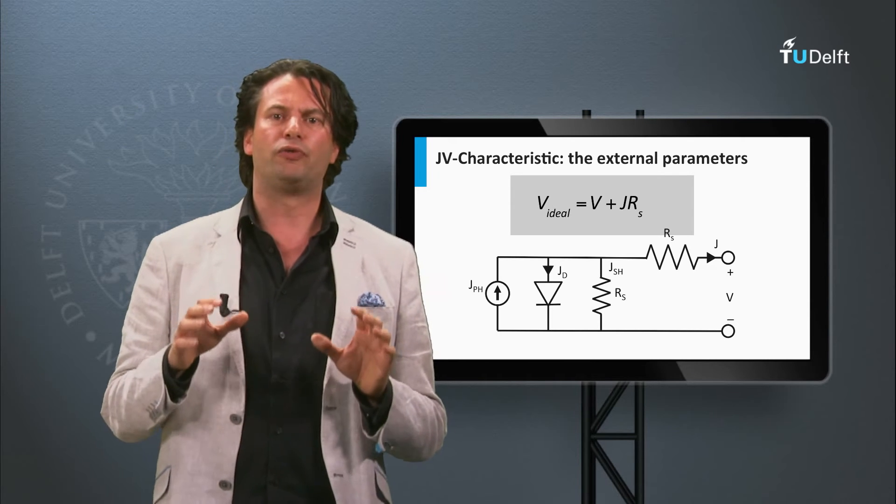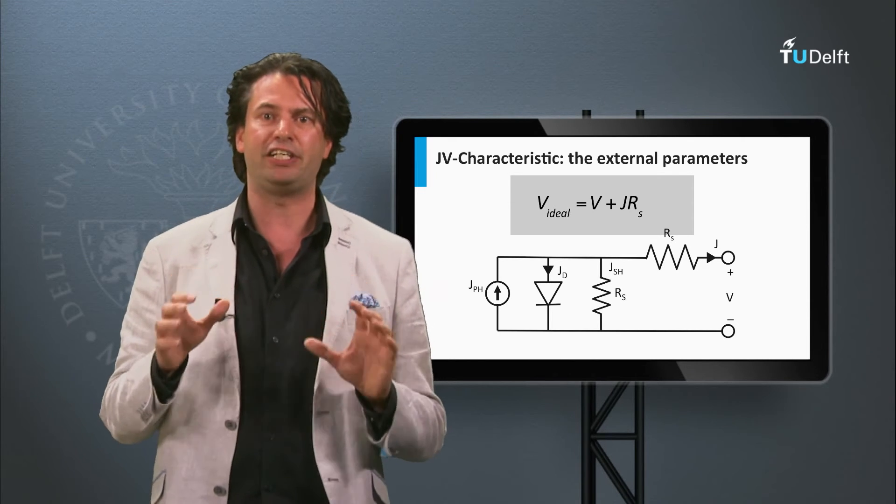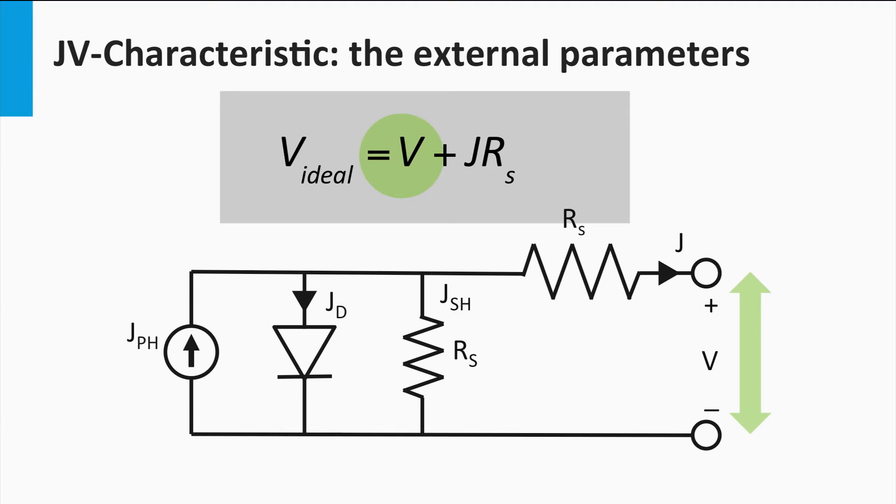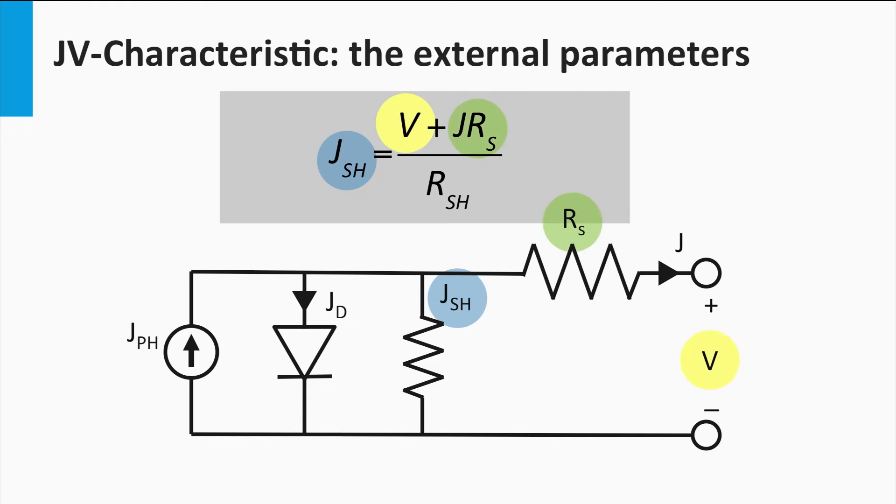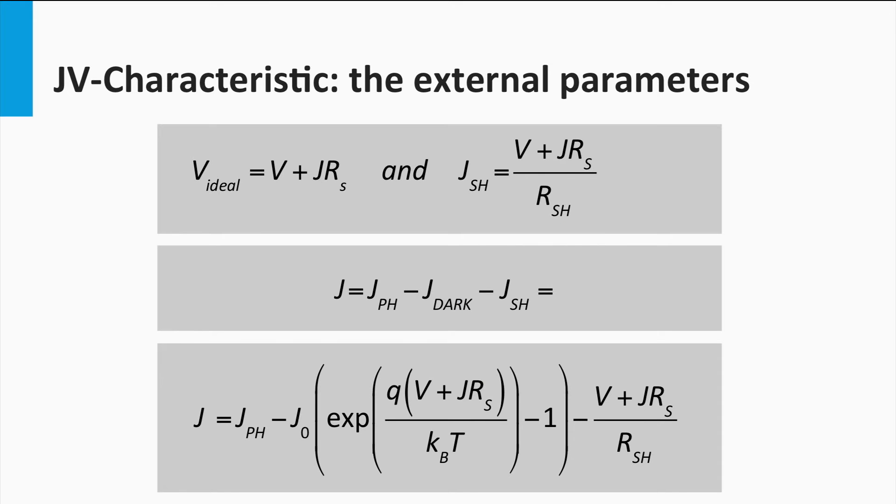The series and shunt resistance results in a more complicated expression for the JV curve. The voltage at the terminal is the voltage of an ideal solar cell minus the voltage lost over the series resistance. The total current is the photocurrent density minus the dark current density of the diode and the current density leaking through the shunt resistance. The shunt current is given by the voltage of an ideal solar cell divided by the shunt resistance. This results in the complex expression shown here. The current density J appears on the left-hand side of the equation as well as on the right-hand side. Note that this expression cannot be solved analytically.